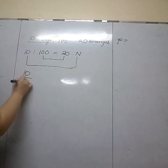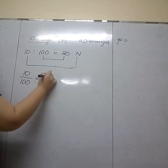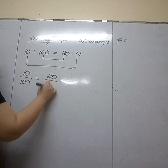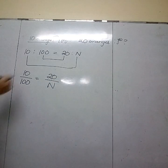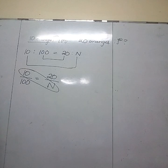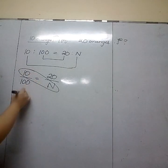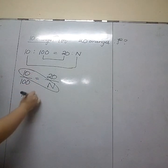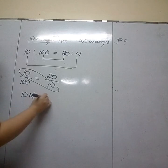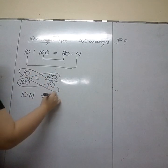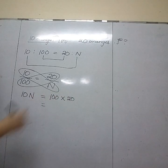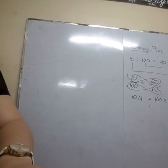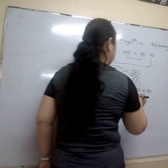N over 100 is equal to 20 over 10. And we're going to cross multiply, so 10 times N is equal to 100 times 20. 100 times 20 is 2,000.